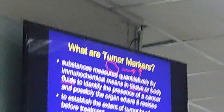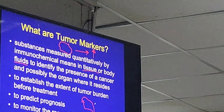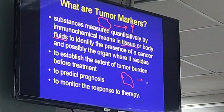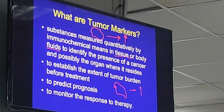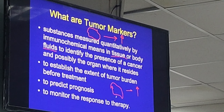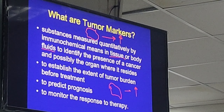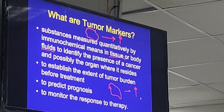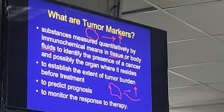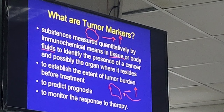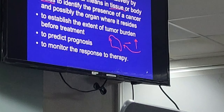There are substances that are either produced by a tumor itself. The tumor usually produces a higher level of tumor markers or higher results. It's also used to predict prognosis, because higher levels of tumor markers suggest you may have a larger tumor. And it's also used to monitor response to therapy.